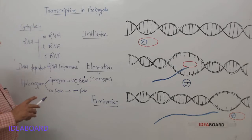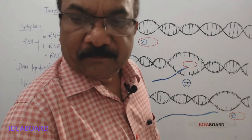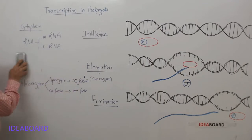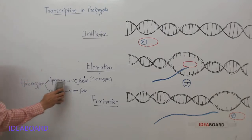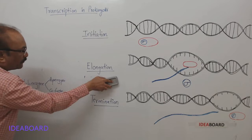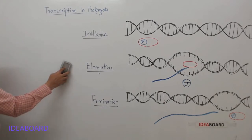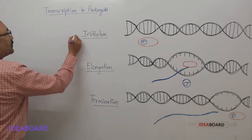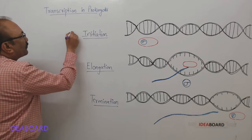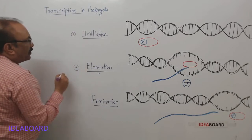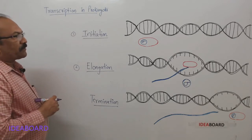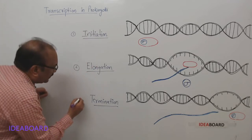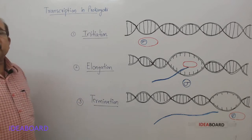Now let us see the process of transcription in prokaryotes. The process occurs in three steps: one is initiation — that is initiation of transcription or initiation of RNA; the second is elongation — elongation of the RNA strand; and the third one is termination.